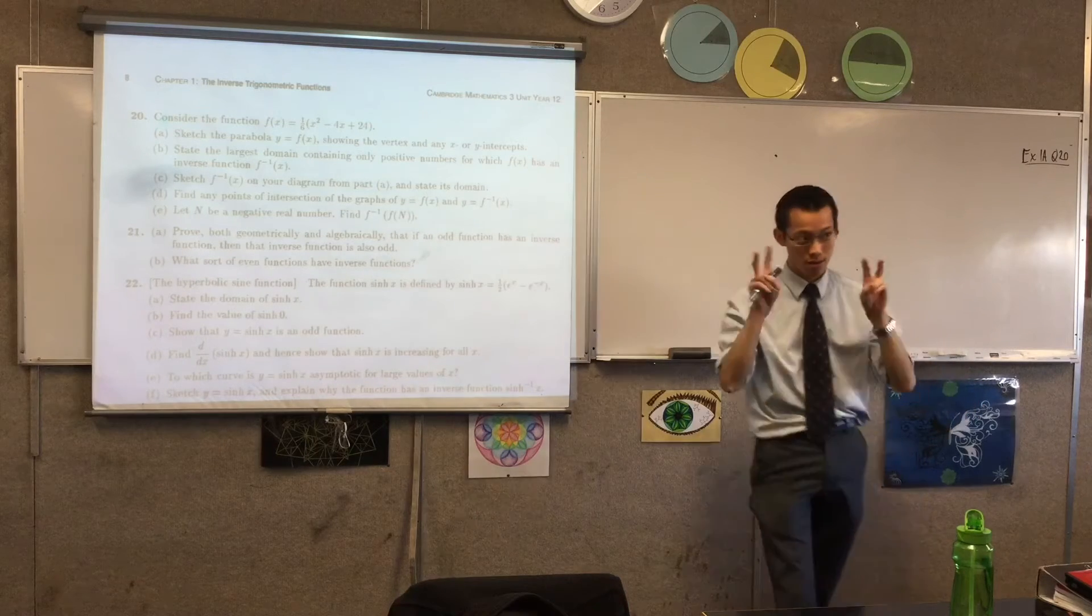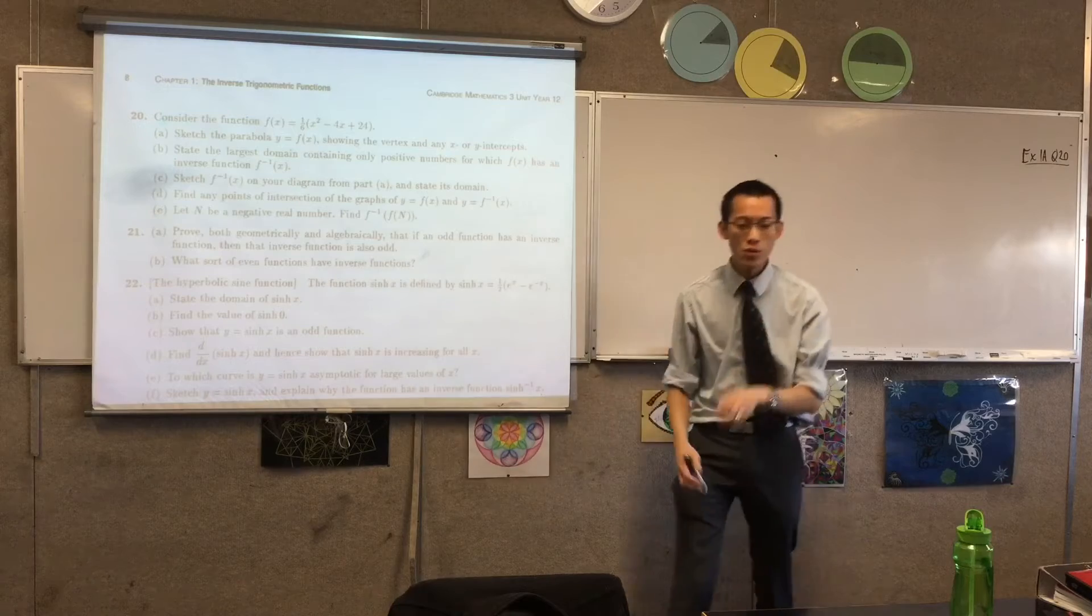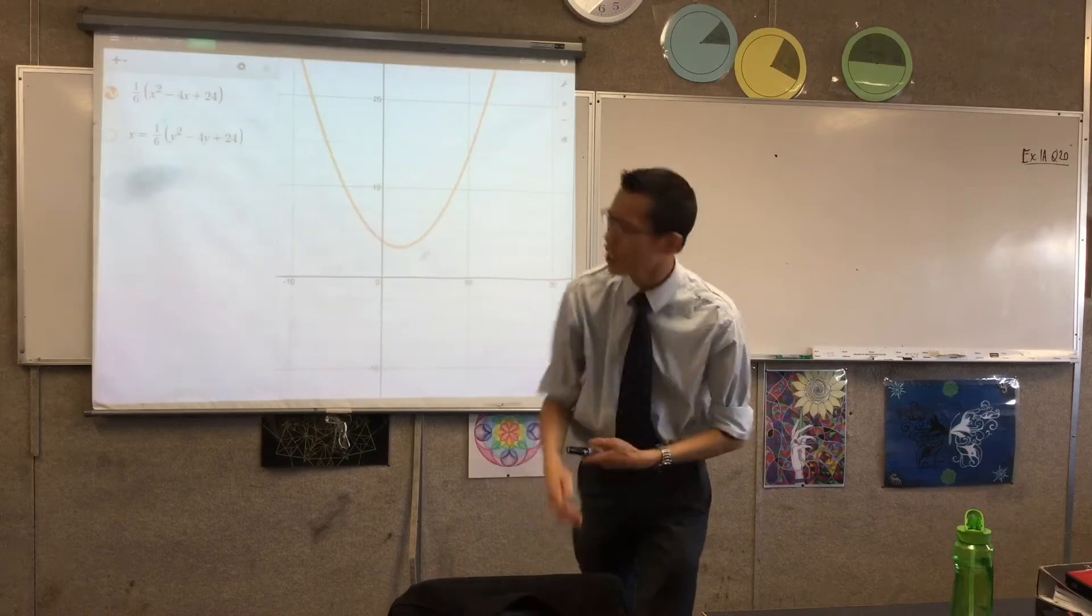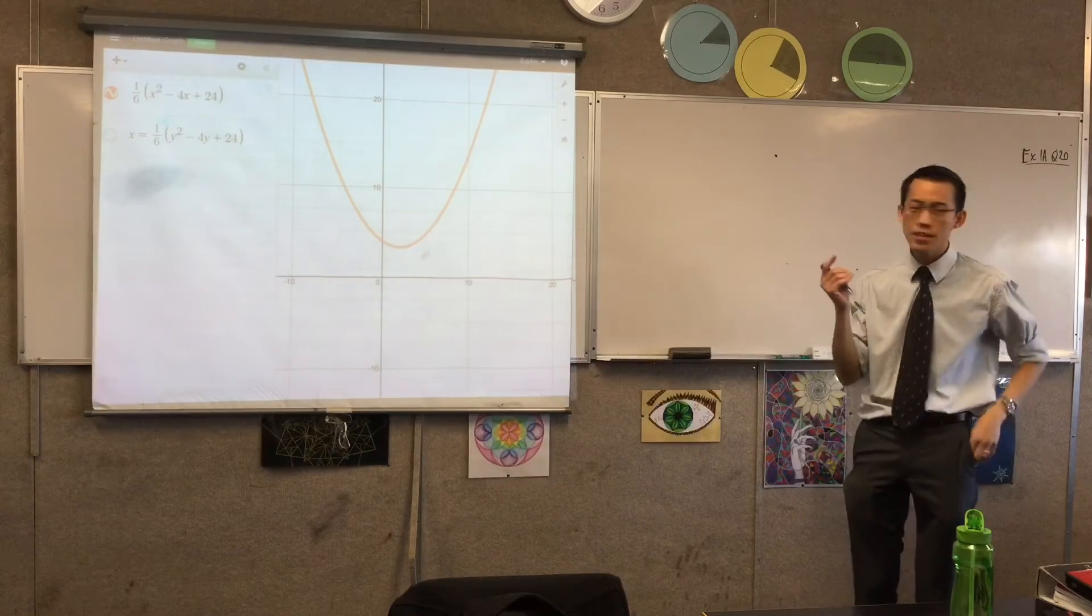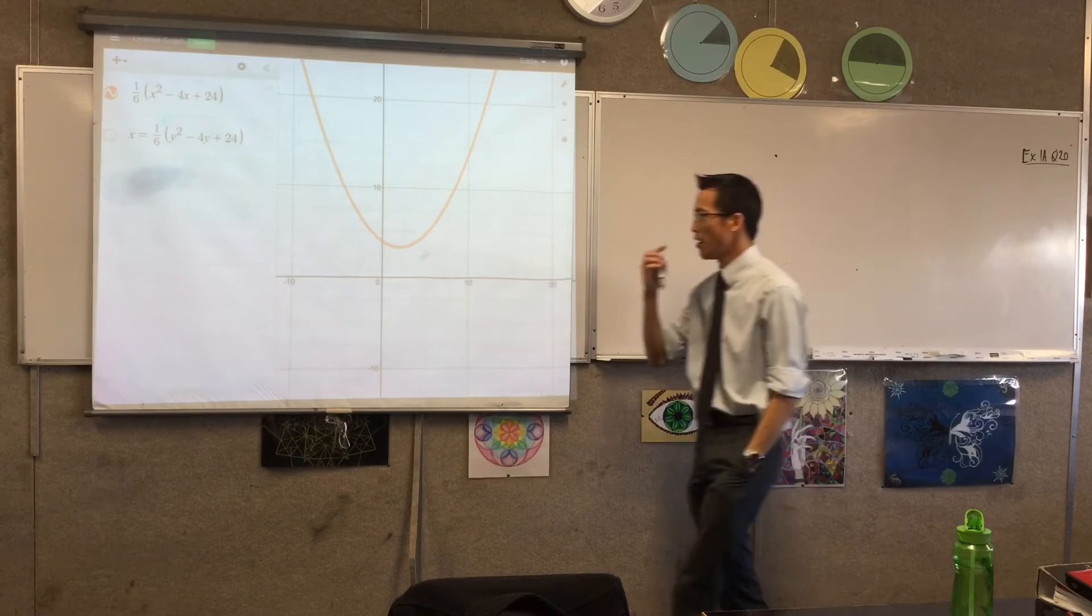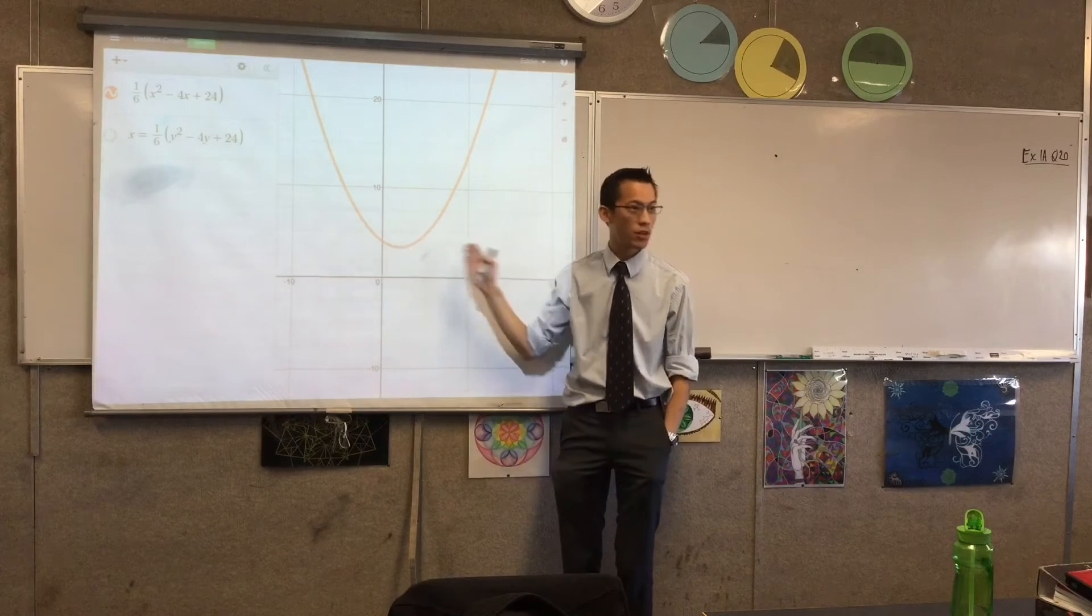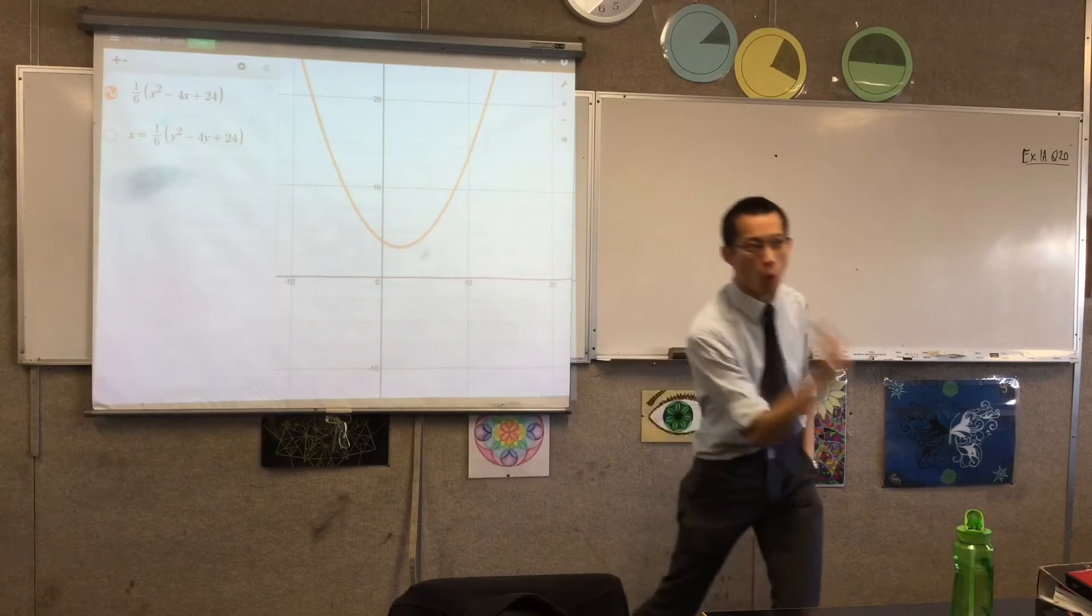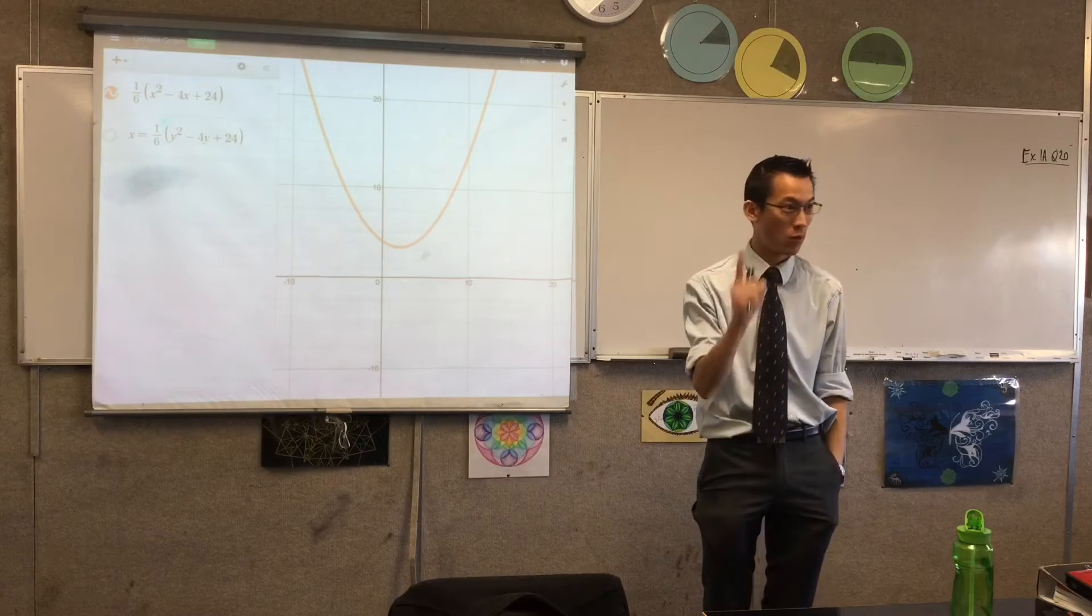It just fails the horizontal line test. The way you, another technical way of saying this, by the way, is that this is not a one-to-one function, okay? So a one-to-one function means for every x value, there's only one y, and for every y value, there's only one x, right?